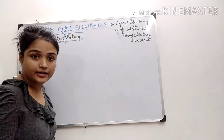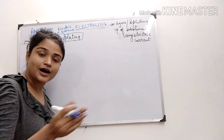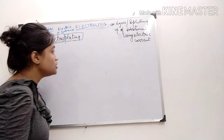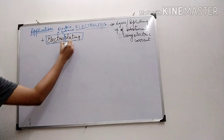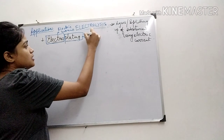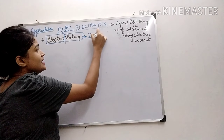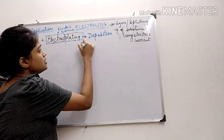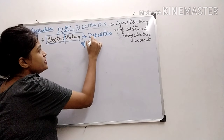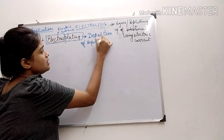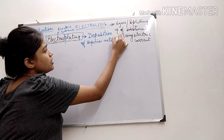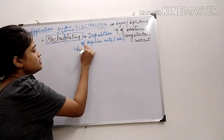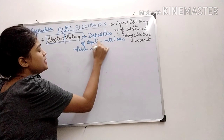So electroplating is the plating of one metal using another metal with the help of electric current — specifically the deposition of a superior metal over an inferior metal.